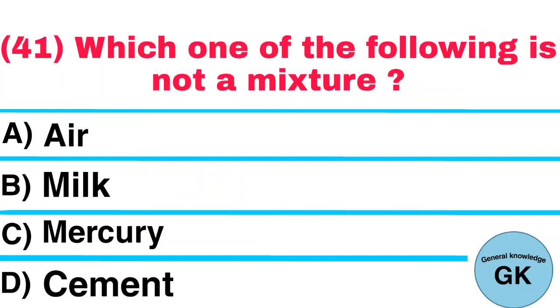Question number 41. Which one of the following is not a mixture? A. Air, B. Milk, C. Mercury, D. Cement. Answer: Mercury.